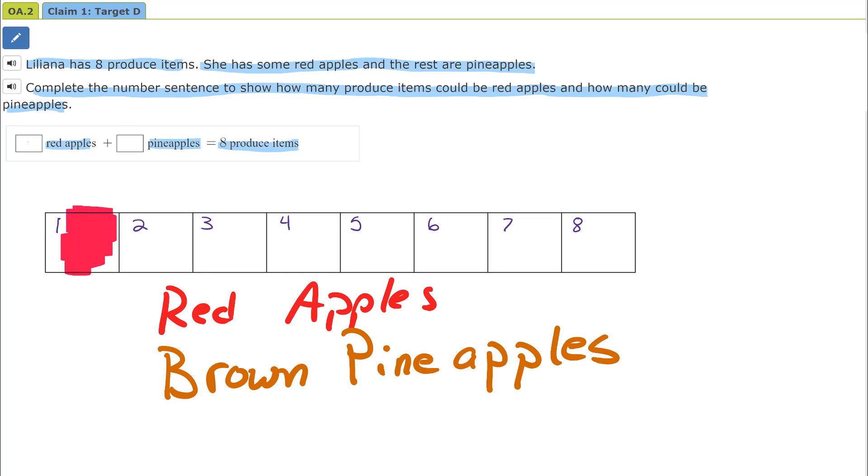So I'm going to shade in the first three squares. There's the first three squares and we have one, two, three. I could choose any number but I just chose that we have three red apples.